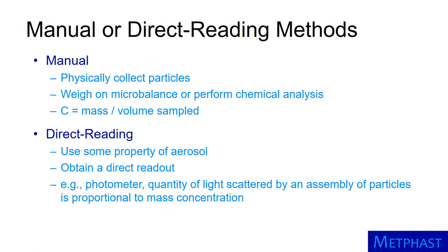The method of aerosol sampling may be manual or direct reading. In manual methods, particles are physically collected, usually onto a filter. These filters are then weighed to determine the mass of collected particles, or analyzed chemically to determine the mass of a certain composition. This weight is then divided by the air volume sampled to obtain mass concentration. In contrast, direct reading methods use some property of an aerosol to obtain a direct readout of concentration — for example, aerosol photometers use the fact that the amount of light scattered by an assembly of particles is related to their mass concentration.